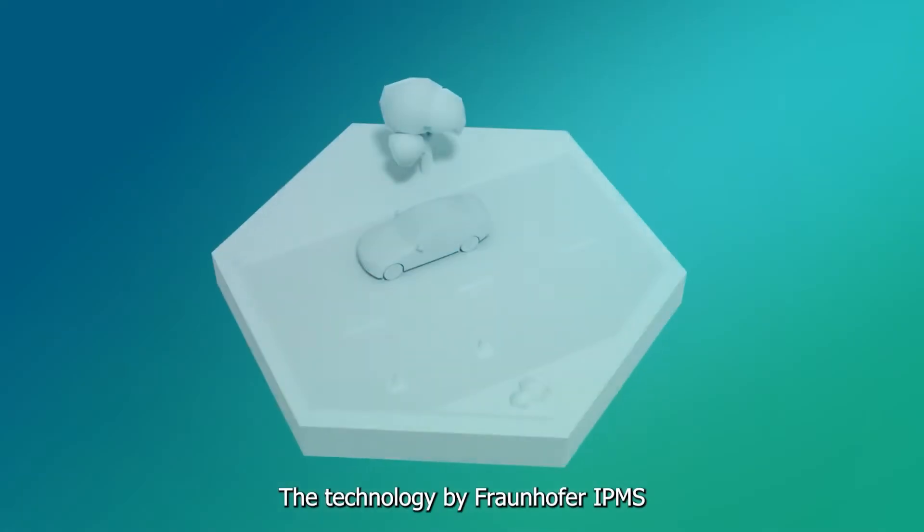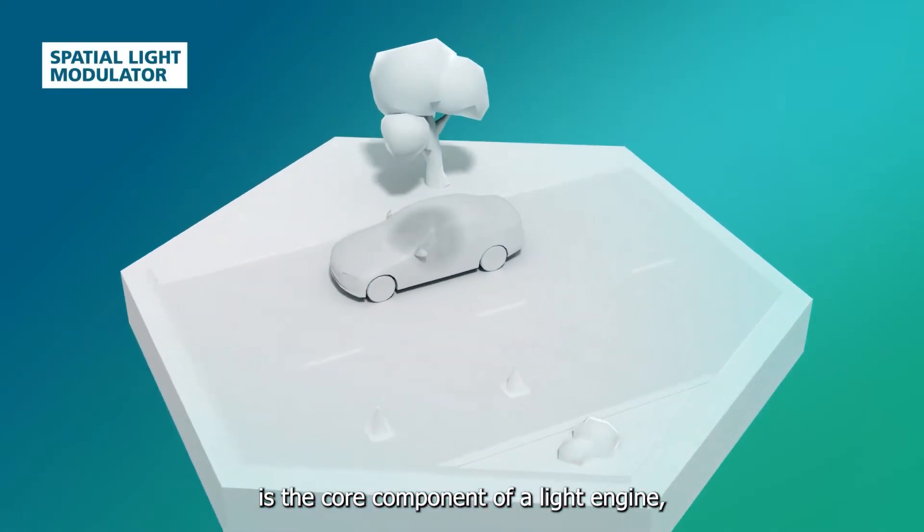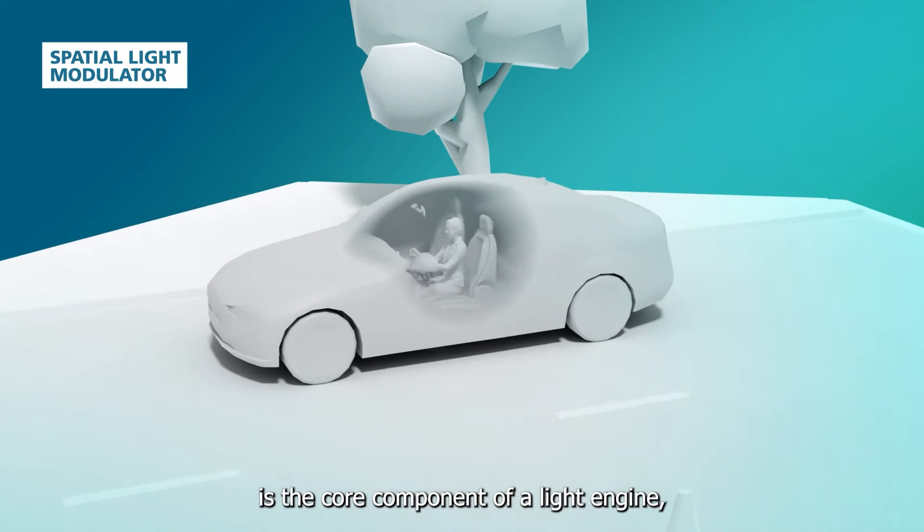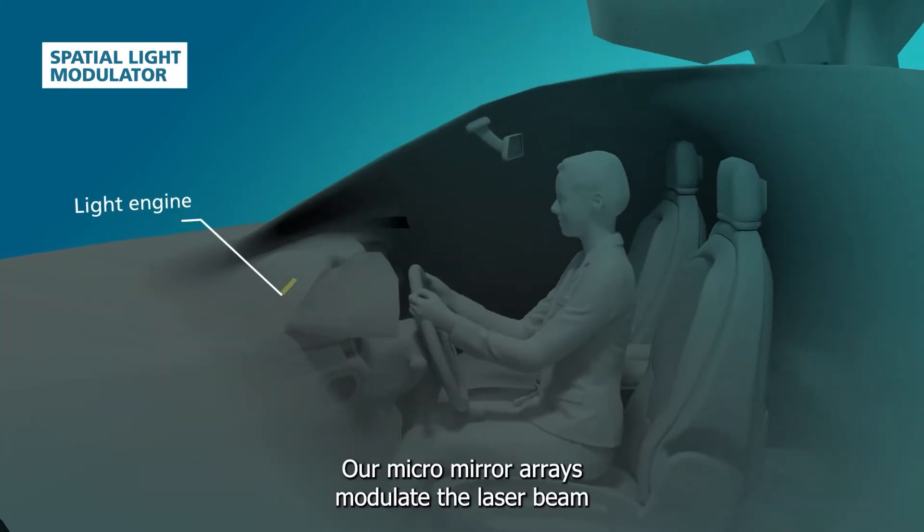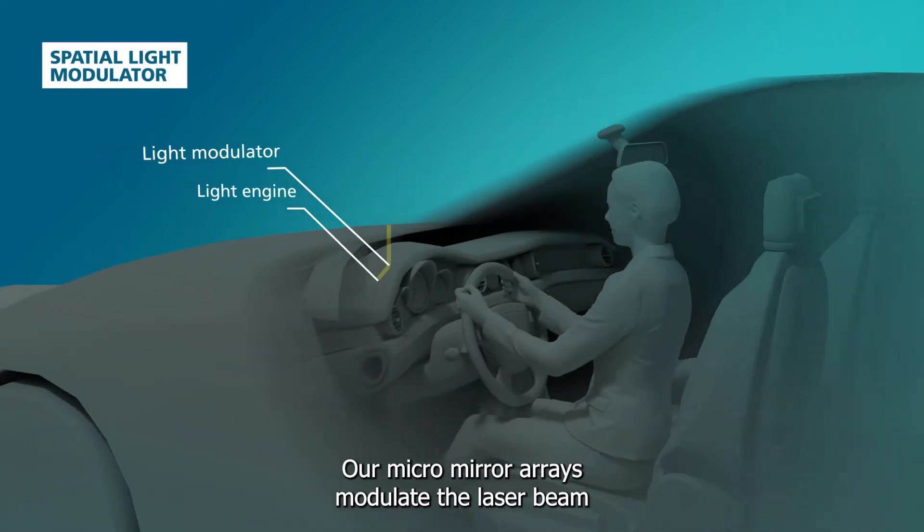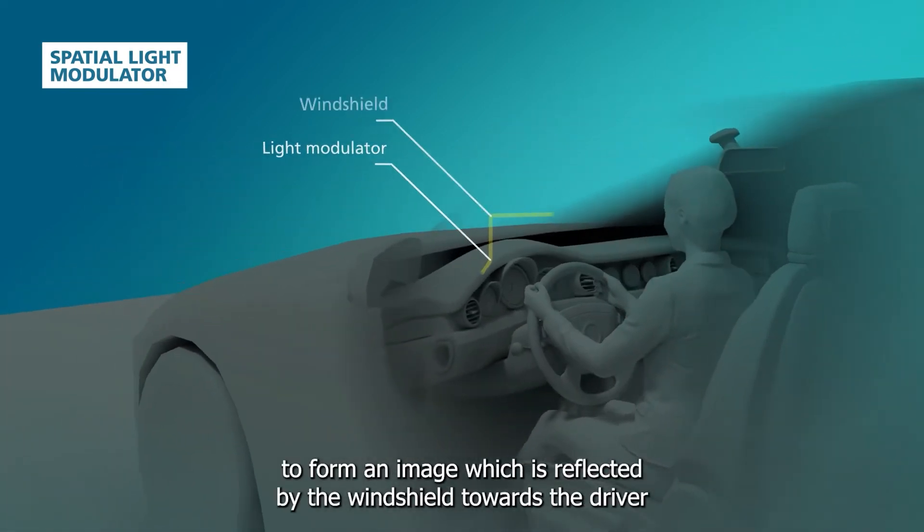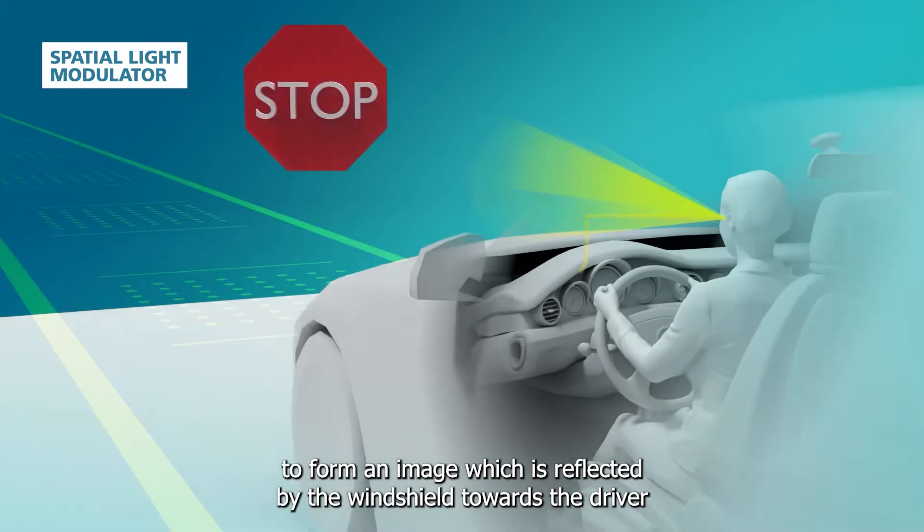The technology by Fraunhofer IPMS is the core component of a light engine which generates perfectly natural-looking 3D images. Our micro-mirror arrays modulate the laser beam to form an image which is reflected by the windshield towards the driver.